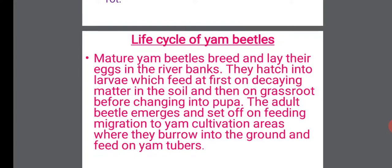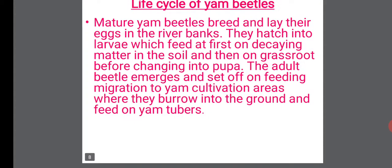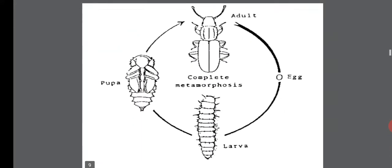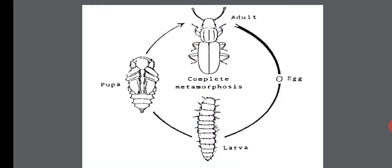Life cycle of the yam beetle: the yam beetles breed and lay their eggs in river banks. They hatch into larvae which feed at first on decayed matter in the soil and then on grass roots before changing into pupae. The adult beetle emerges and sets off on a feeding migration, moving to yam cultivation areas where they burrow into the ground and feed on yam tubers. They undergo complete metamorphosis: egg, larva, pupae, and adult.